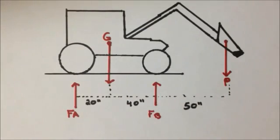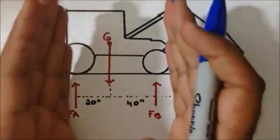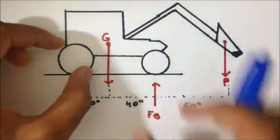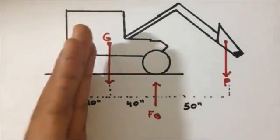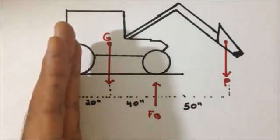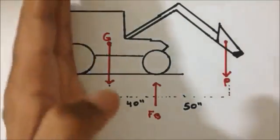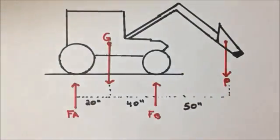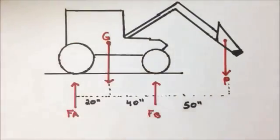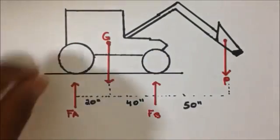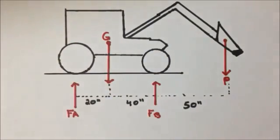Another important thing to note is that since we have four wheels — two here and two here — the support reactions acting on this line of action will be distributed amongst these two wheels. This means that each wheel will support half of the original support reactions.